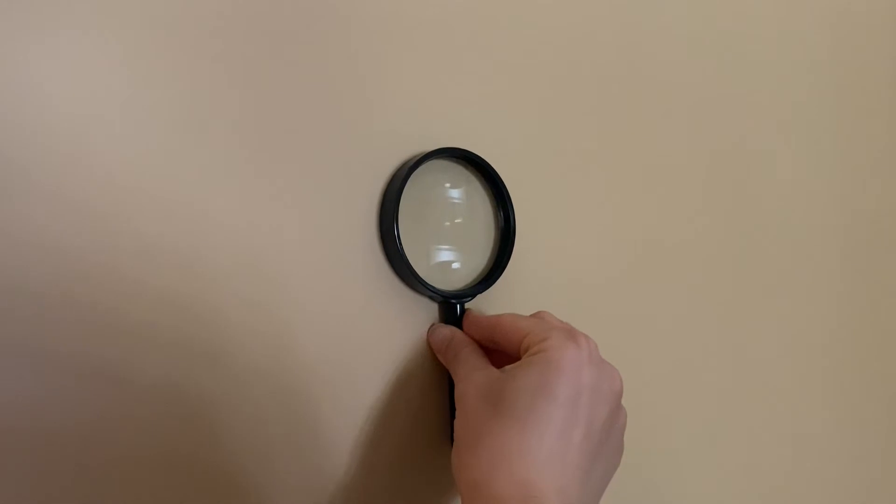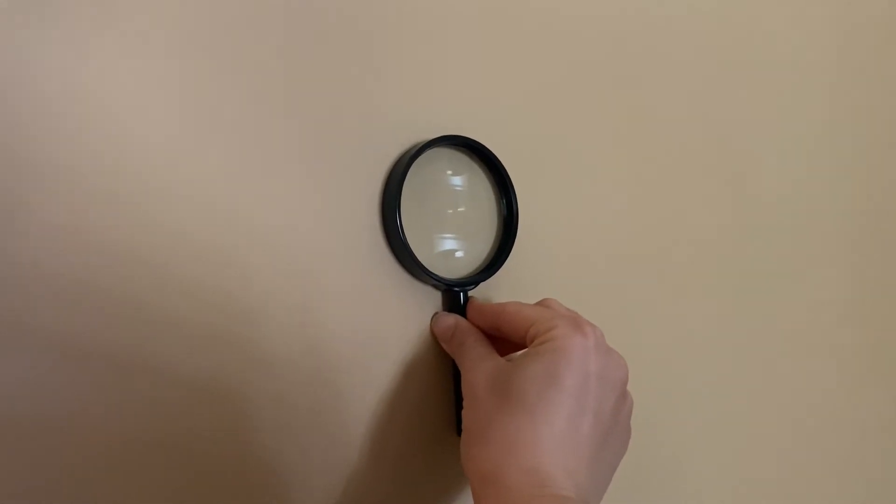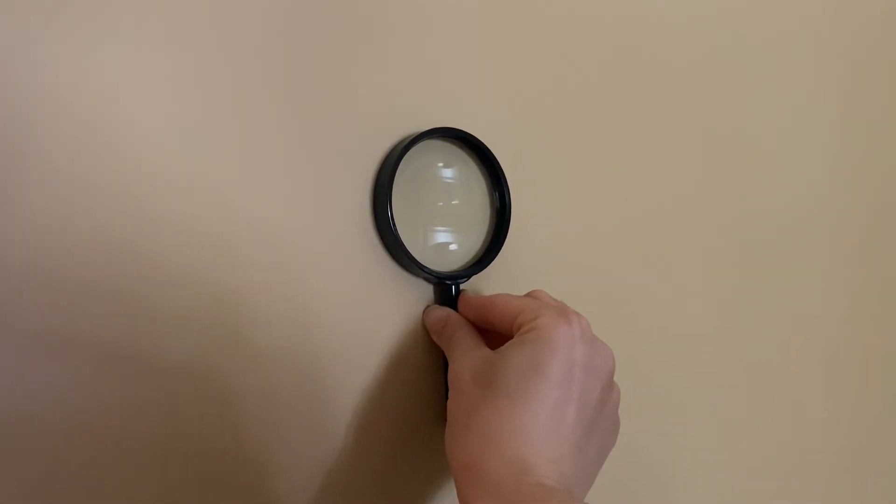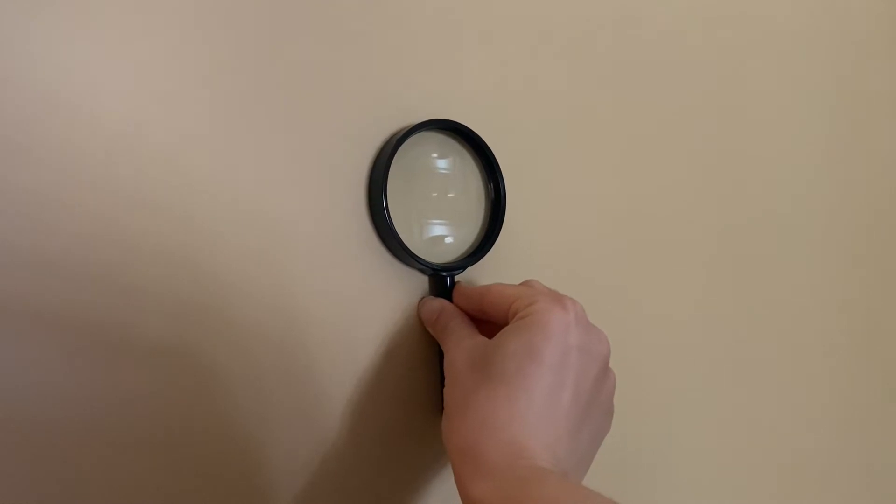To figure out the focal length of your magnifying glass, you're going to start with your magnifying glass held flush against the wall in front of you. Behind you, there should be a window, otherwise this will not work.